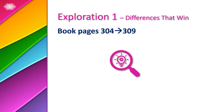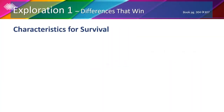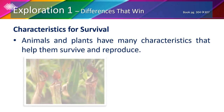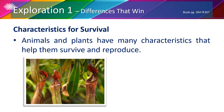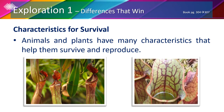In exploration 1 we're going to explore and identify some characteristics and traits that help living things survive, find mates, and reproduce. This is a pitcher plant — it's called a pitcher plant because its shape is like a water pitcher. This plant grows in soil that doesn't have a lot of nutrients, so to survive it gets nutrients from insects such as flies. Because the plant can't move to get the flies, it has special characteristics to help it trap the insects it needs.